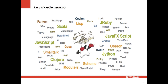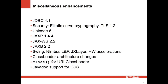Interestingly enough, InvokeDynamic will also be used in the Java language — most likely in Java 8 — to implement Lambda expressions. We will actually show JDBC 4.1, which was slightly changed to take advantage of some JDK 7 features, in the demo. So let me not talk about that right now.